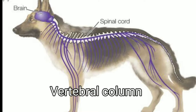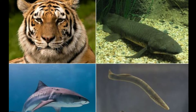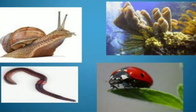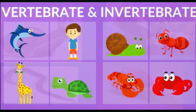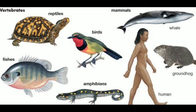Animals with a vertebral column and those without it form two groups known as vertebrates and invertebrates respectively. Snakes, birds, fish, and kangaroos, as well as humans, are vertebrate animals.